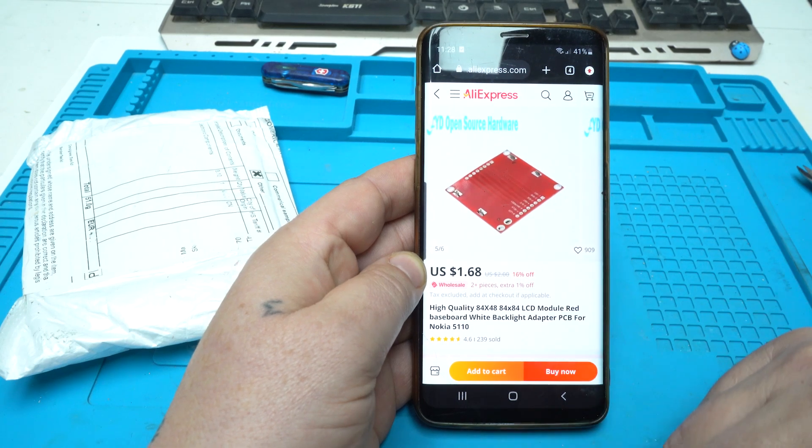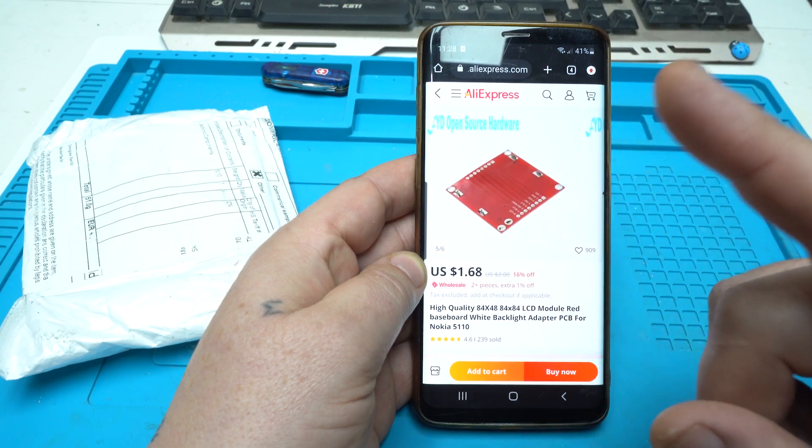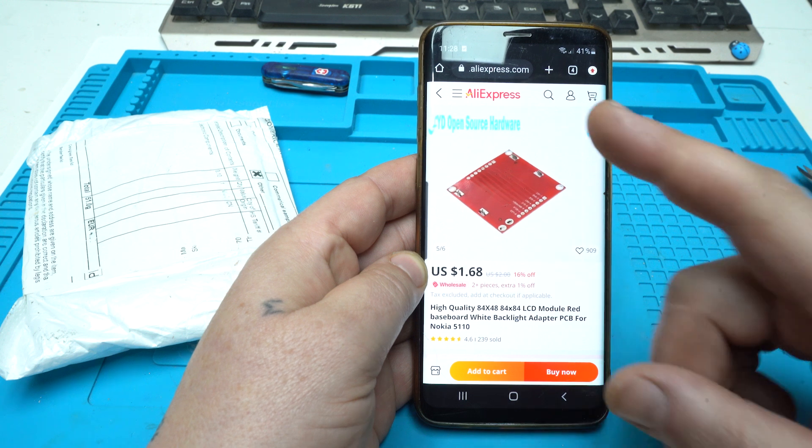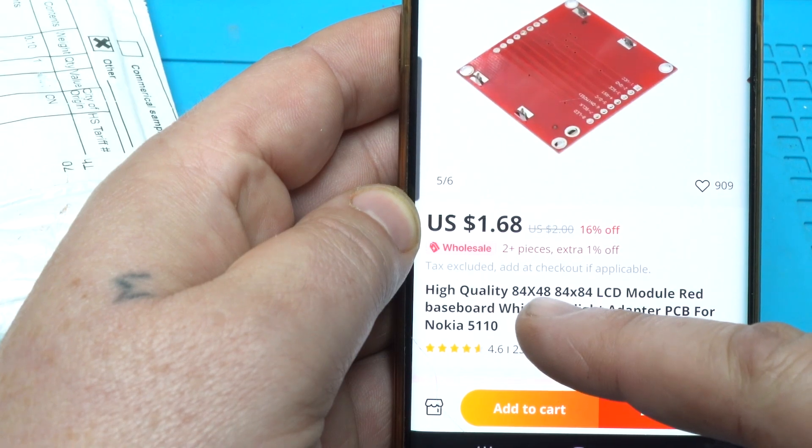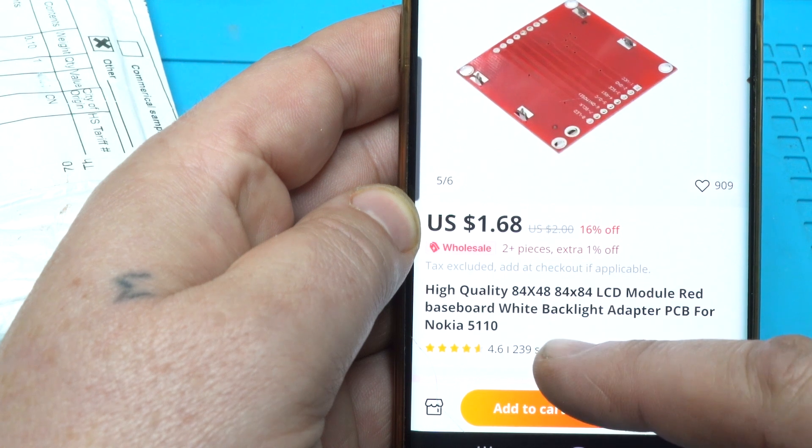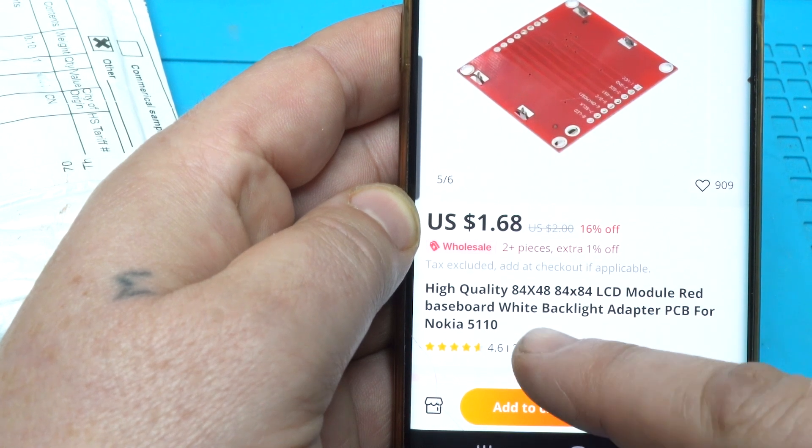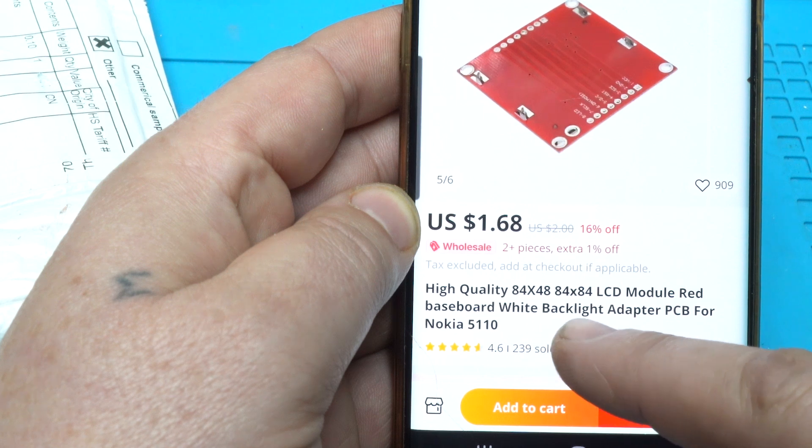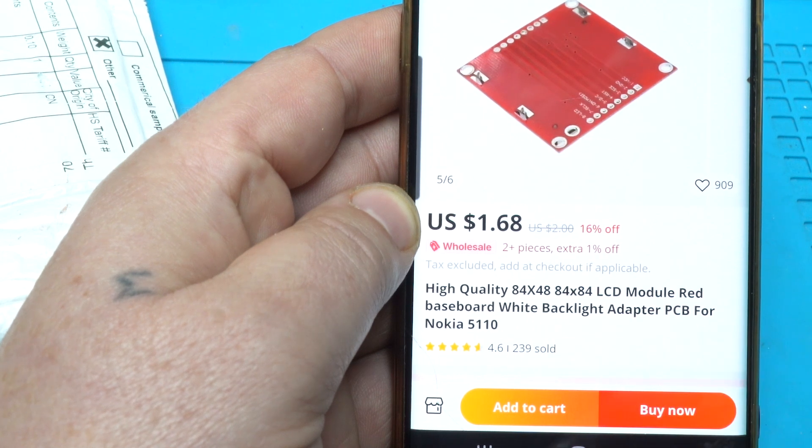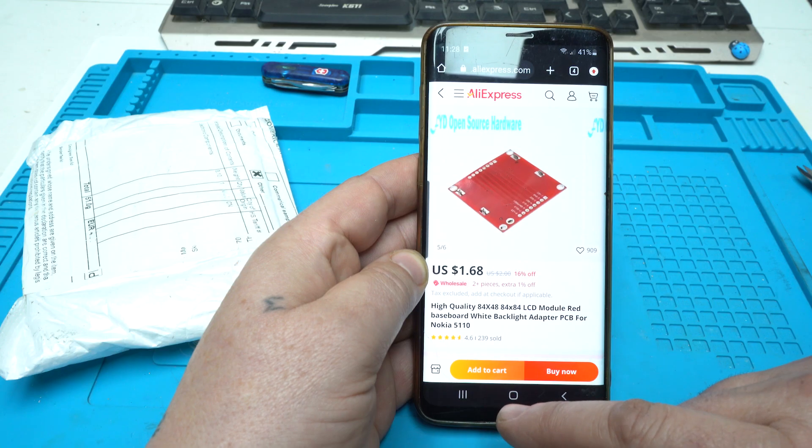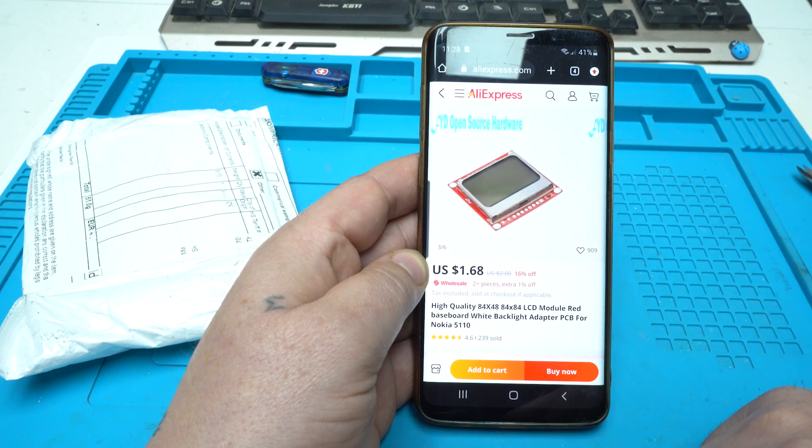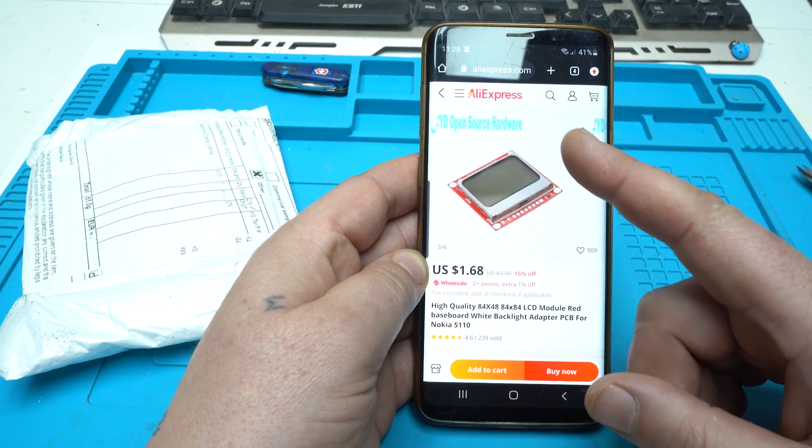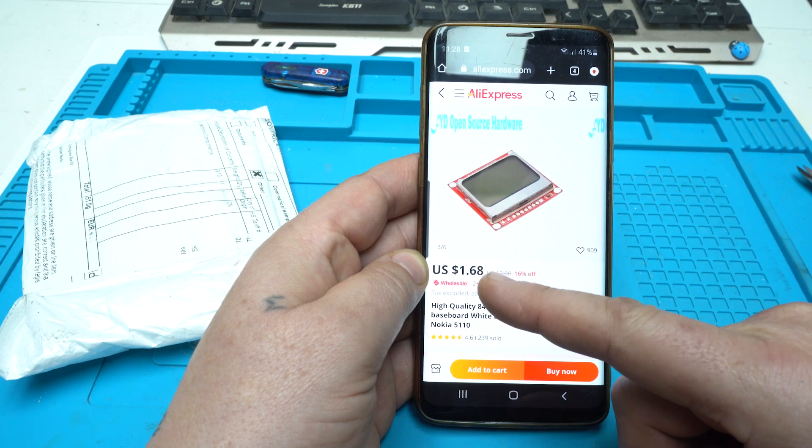$1.68 I paid for this gadget and what is it? It's a high quality 84 by 48 pixels LCD model red baseboard white backlight adapter for PCB Nokia 5110. It's a very popular LCD screen that is used in Nokia phones. You can get it from AliExpress for $1.68.